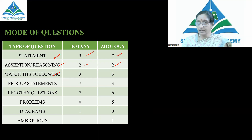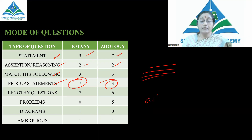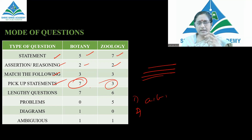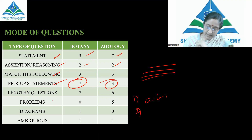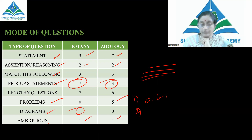This time, match the following questions were decreased compared with 2021. There were more pick-up statement questions, where statements are given and we have to identify which statement is correct from the given options. Lengthy options were also present. Five questions appeared related to the dihybrid part. One diagram-based question was there, along with one ambiguous question in the living world and another related to the anatomy of flowering plants.